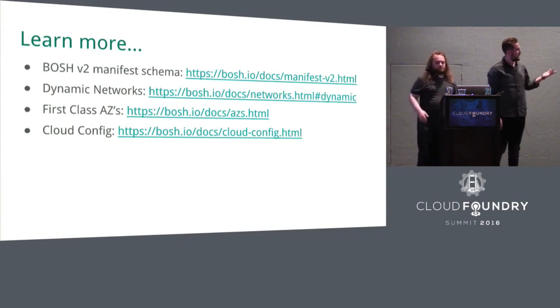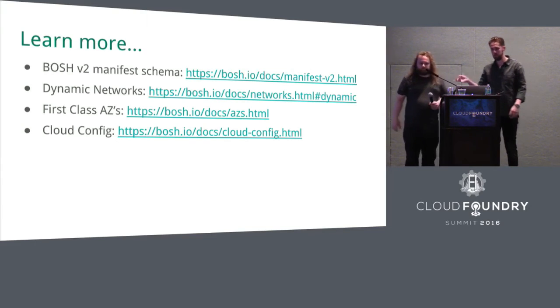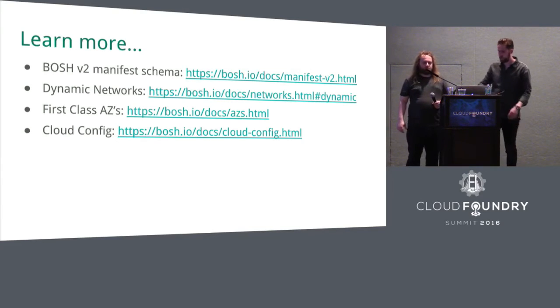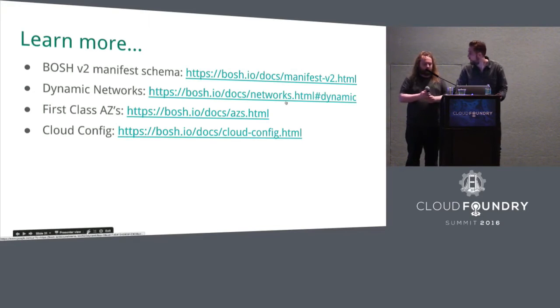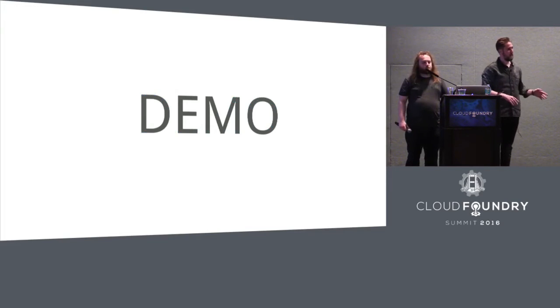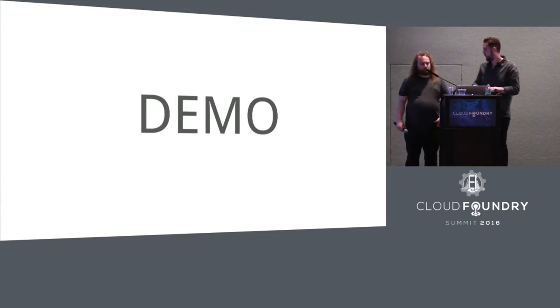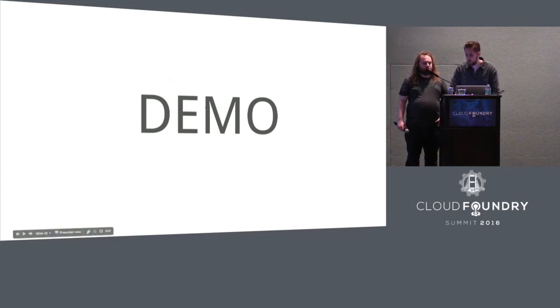This is all documented on the bosh.io website — we'll probably upload the slides afterwards so you can get those links. What we're going to do now is walk through an example of how you'd build a service broker using these concepts. We're going to look at the CF CLI lifecycle and how that orchestrates BOSH tasks and IaaS resources.